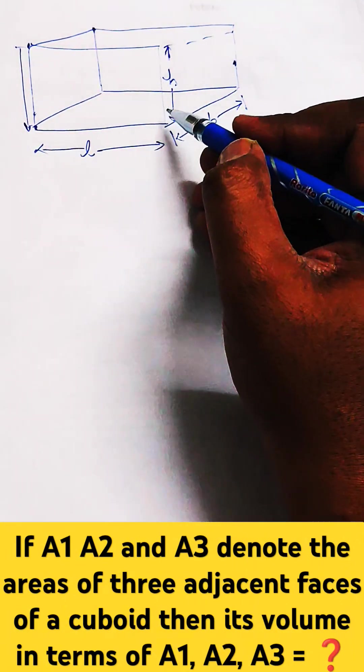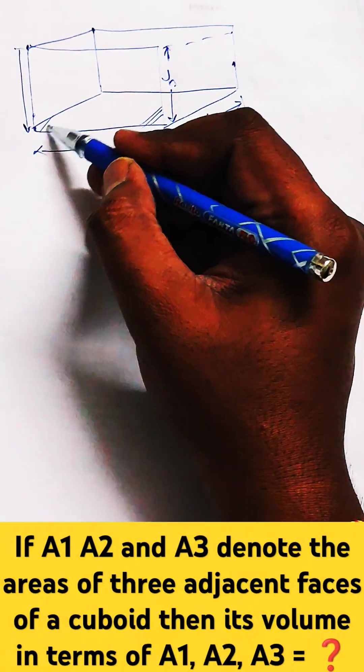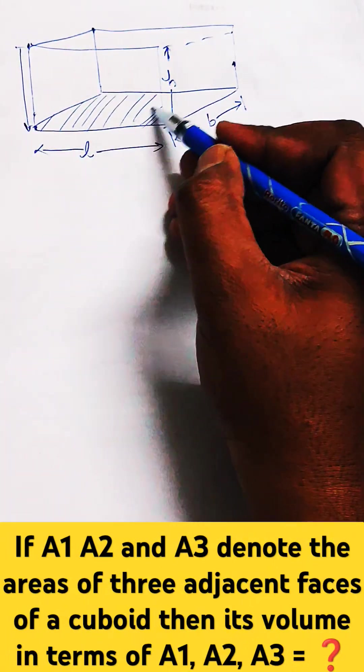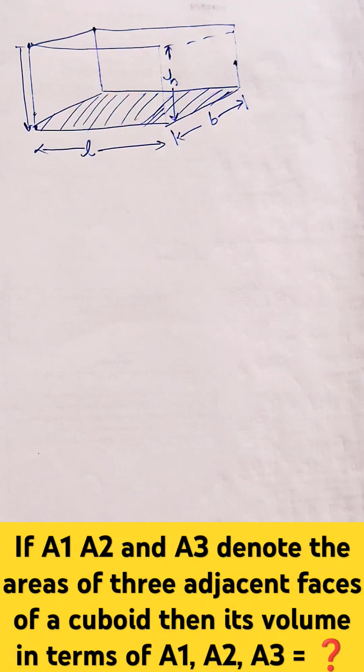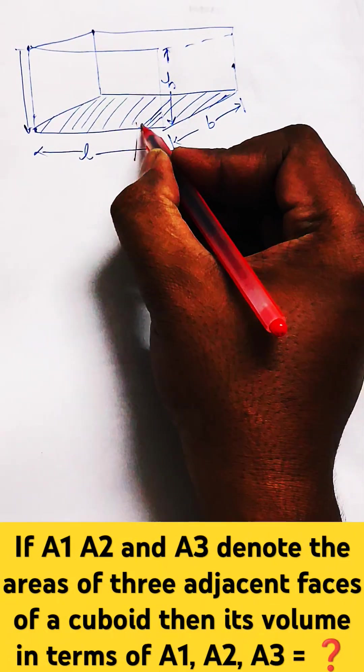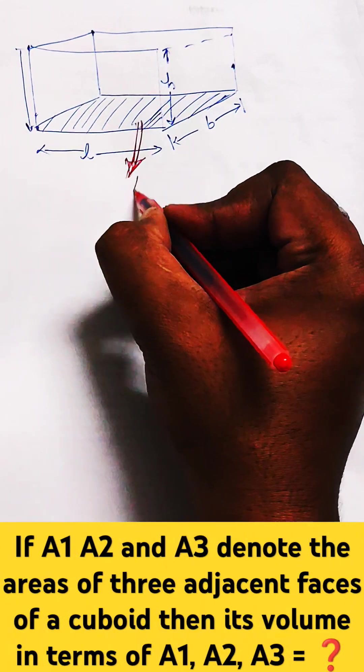Then the three faces which are formed are, first of all, the base which is formed by L into B. So, the first face will be L into B and the area of this face is A1.